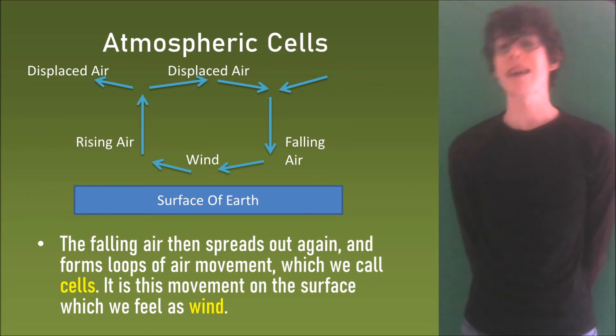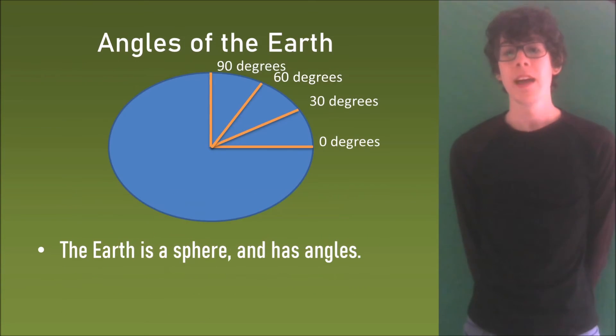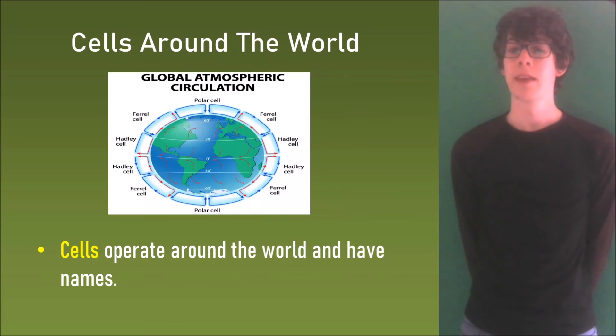The fallen air then spreads out again and forms loops of air movement which we call cells. It is this movement of the surface which we feel as wind. The Earth is a sphere and it has angles. Cells operate around the world and have names.